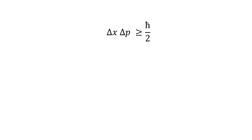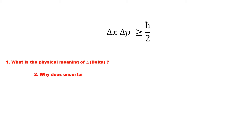But there are two questions related to this relation. First, what is the physical meaning of delta in this equation — that is, how is uncertainty measured for any quantity? Second, why is this uncertainty relation for position only with momentum, and why not with any other quantity? We will answer both questions in this video.